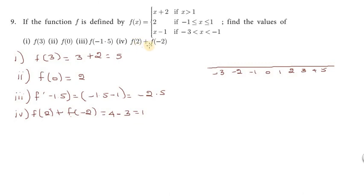Last question, f plus f value. So 2 plus 2 is 4. Then f of minus 2, minus 2 is 3. Minus 3 minus 1 is 3. So 4 minus 2 is equal to 4 minus 3.